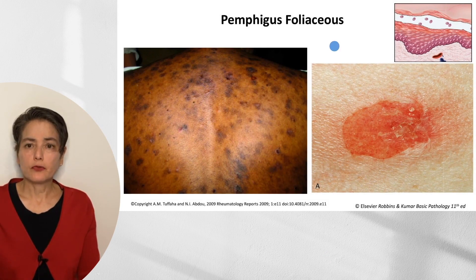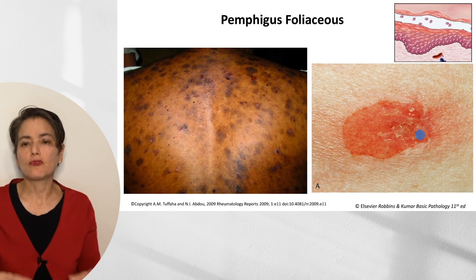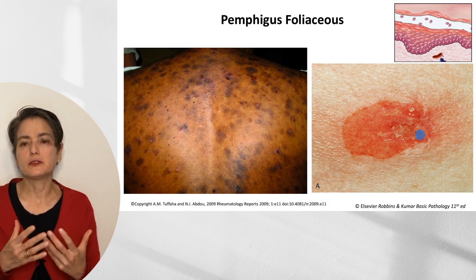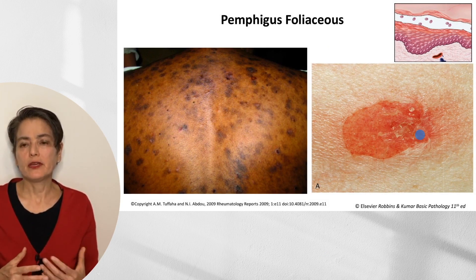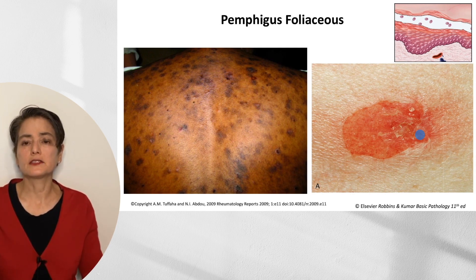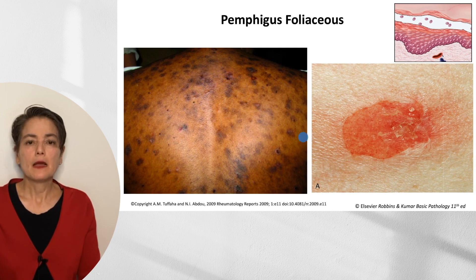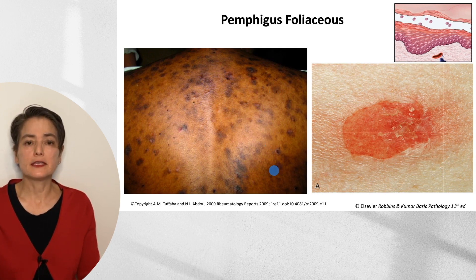Pemphigus foliaceous, remember, is our subcorneal blister. As you see here, we don't really see that raw erythematous base we saw for pemphigus vulgaris; instead, there's a serous crust. In patients with lightly pigmented skin it may appear erythematous, whereas in individuals with darker pigmented skin the lesions may appear hyperpigmented.